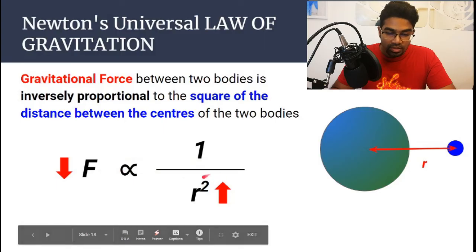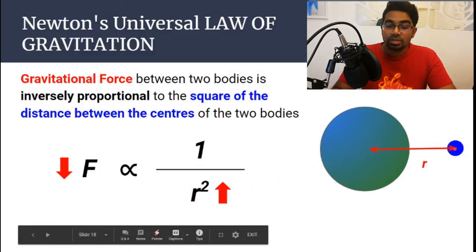And when the distance between the two objects becomes larger, when the object moves further apart, then the gravitational force between the two objects will become weaker.